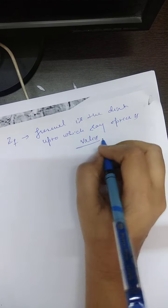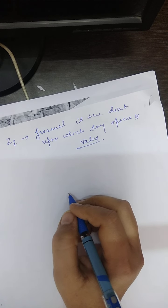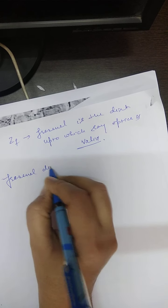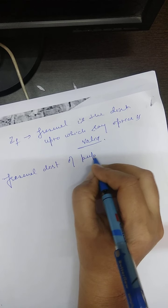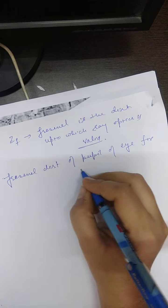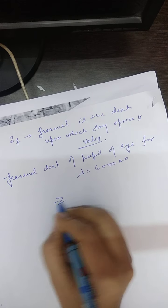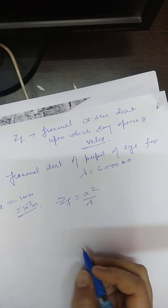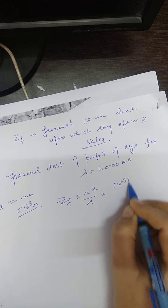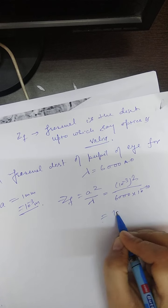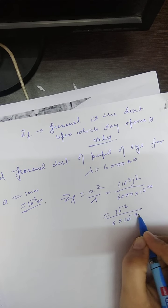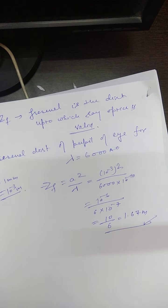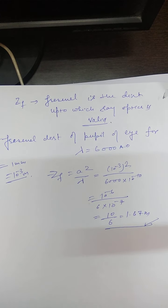For example, calculate the Fresnel distance for the pupil of the human eye. With aperture a = 1 mm = 10⁻³ m and λ = 6000 Å = 6×10⁻⁷ m: ZF = a²/λ = (10⁻³)²/(6×10⁻⁷) = 10⁻⁶/6×10⁻⁷ ≈ 1.67 meters.